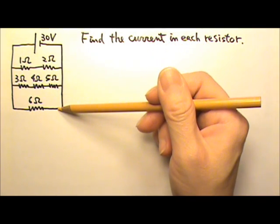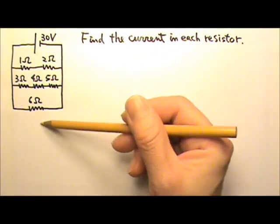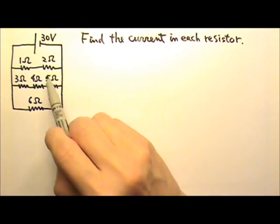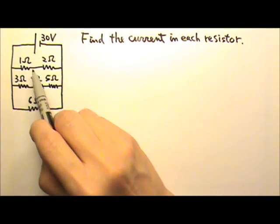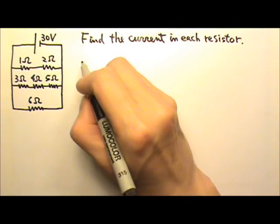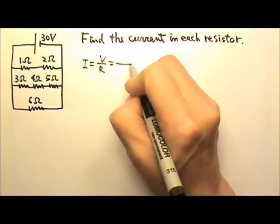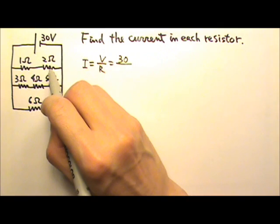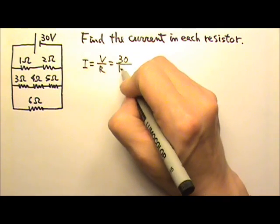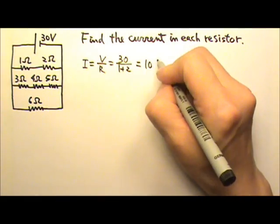To find the current in each resistor, there is no need to find the equivalent resistance for this entire circuit. So let's look at the first segment. The first segment has 1 ohm and 2 ohms in series, and they get 30 volts. So the current in the first segment is V over R. There is 30 volts for these two in series, meaning their equivalent resistance is 1 plus 2. Therefore the current in this segment is 10 amps.